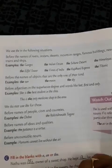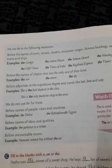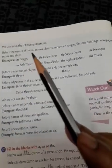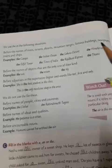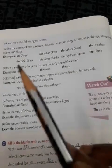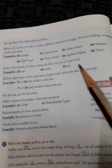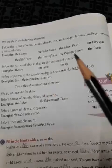We use 'the' in the following situations. We use 'the' before the names of rivers, oceans, deserts, mountain ranges, famous buildings, newspapers, trains, and ships. For example: the Ganges, the Indian Ocean — because we are talking about a particular ocean — the Sahara Desert, the Himalayas, the Eiffel Tower, the Times of India, the Rajdhani Express.